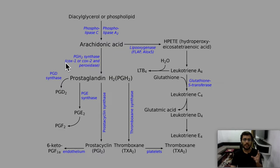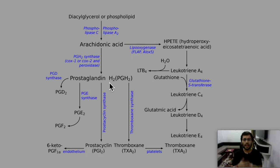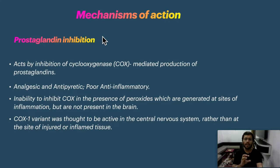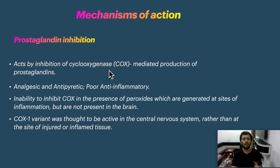If any enzyme is inhibited in the COX pathway, the product formed downstream will not be produced. If that product plays an important role in pain and inflammation, reducing it will reduce fever and pain. Paracetamol inhibits COX, thereby decreasing the production of prostaglandins, giving it analgesic and antipyretic properties.